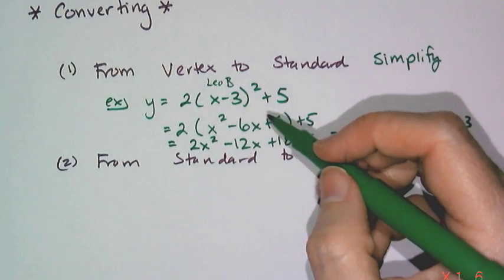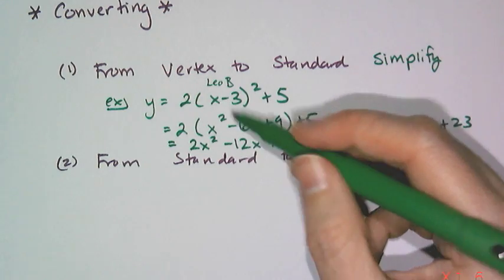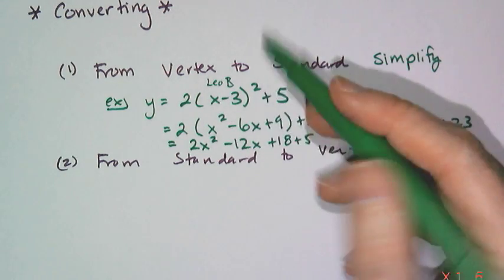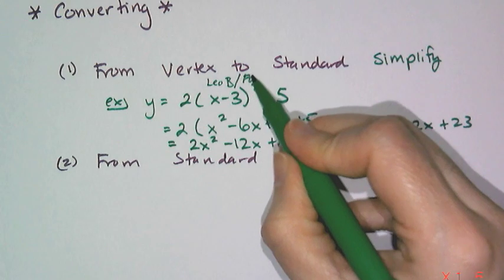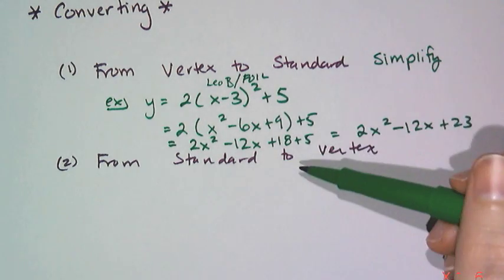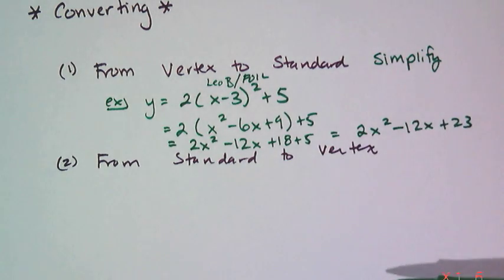And this conversion is actually a pretty easy conversion if you remember how to use LEOB or FOIL, right? You just have to multiply it out, and distribute, and then combine like terms, and you have your standard form equation.